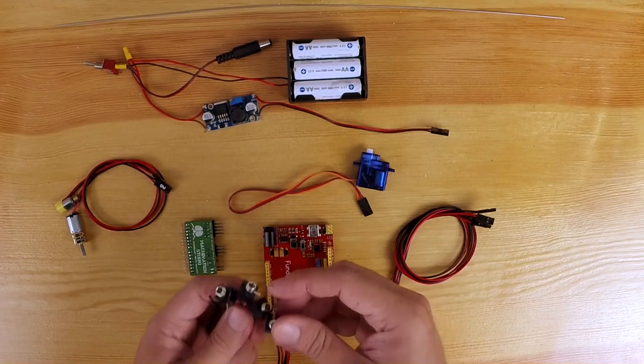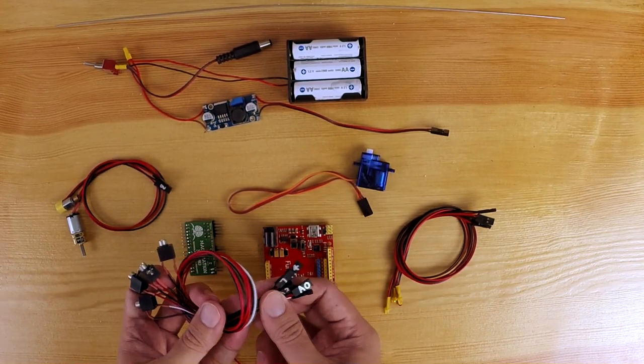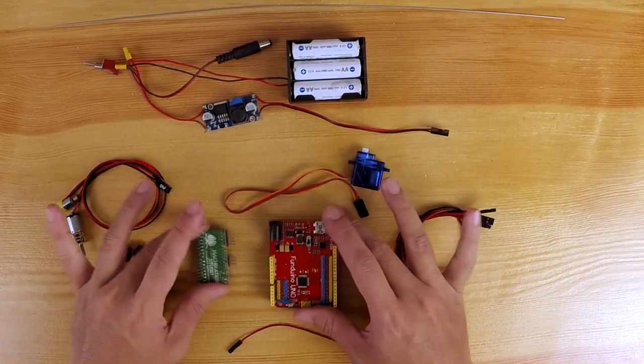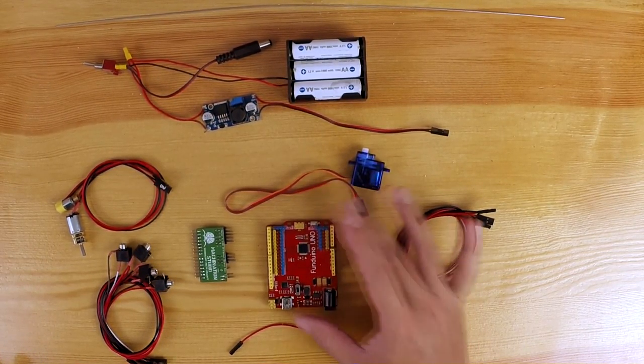The stereo connectors. Again, these are marked. And a little tiny connector here. Two boards, the Funduino Uno and a breakout board of my own design.